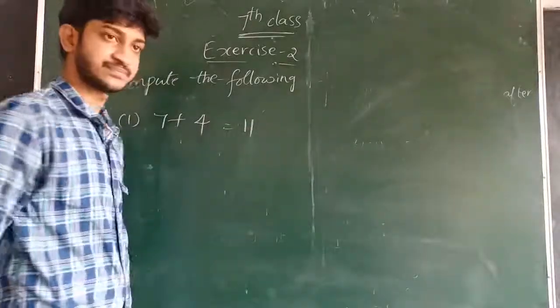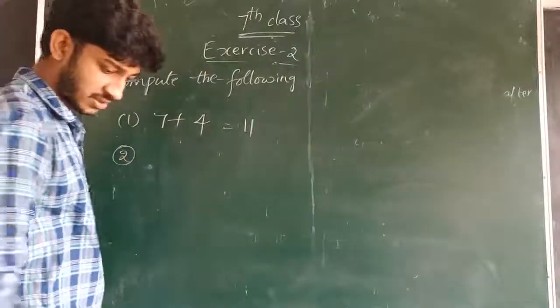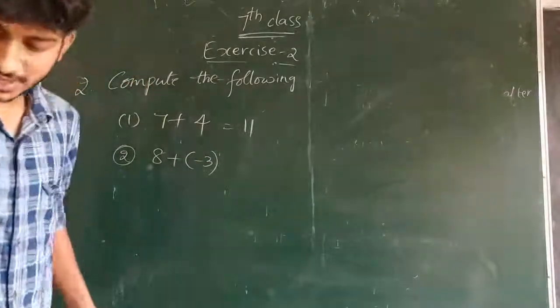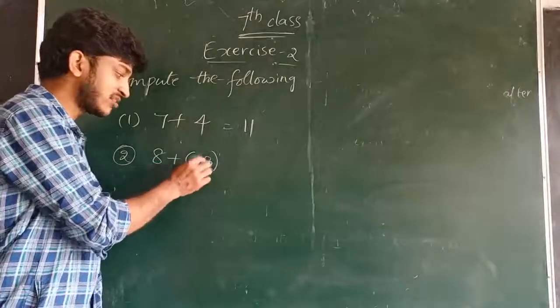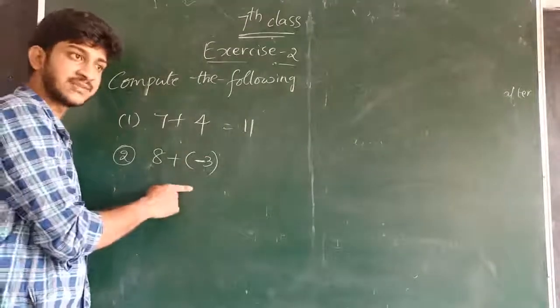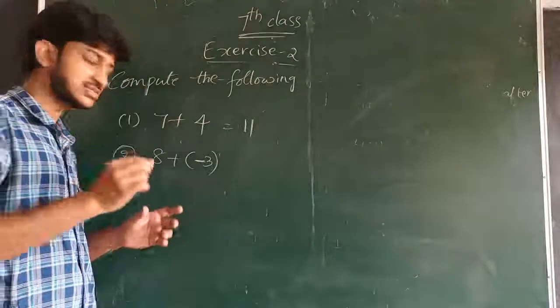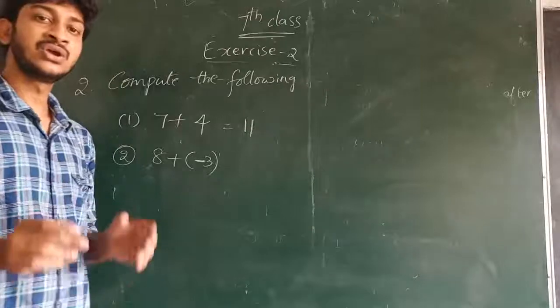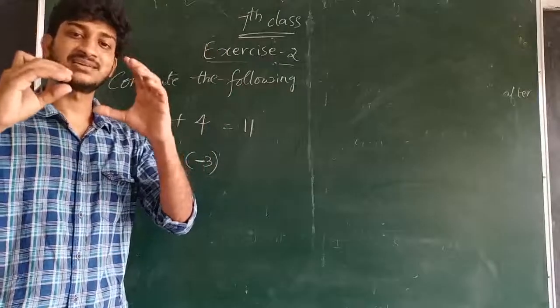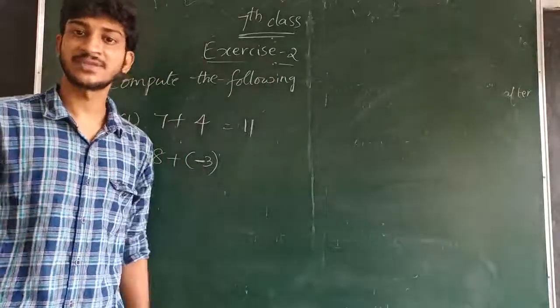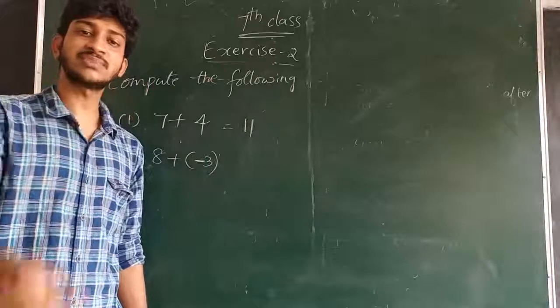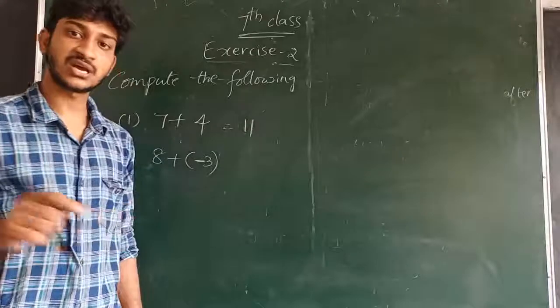See, the next one: 8 plus minus 3. You observe here, eight is a positive number and three is a negative number. It is represented with minus before the number, means it is a negative number. So 8 plus minus 3. I already said that if two different signs are given, means one number is positive and another number is negative, then we subtract the largest number and the smallest number. The greatest number symbol will be the symbol used in the answer.